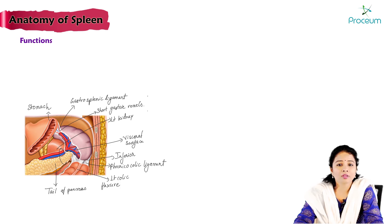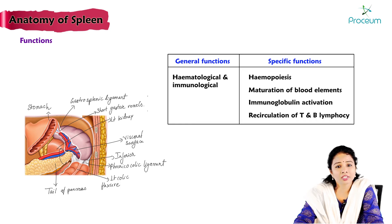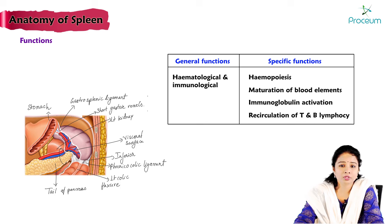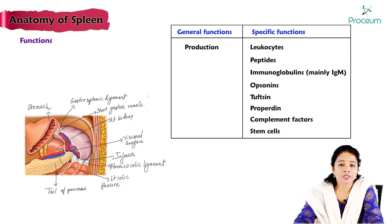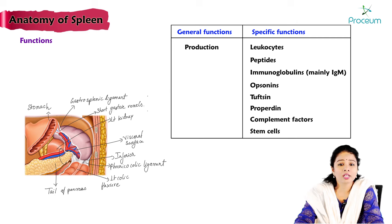Functions of the spleen — hematological and immunological: hemopoiesis, maturation of blood elements, immunoglobulin activation, recirculation of T and B lymphocytes. The spleen also produces leukocytes, peptides, immunoglobulins (mainly IgM), opsonins, tuftsin, properdin, complement factors, and stem cells.